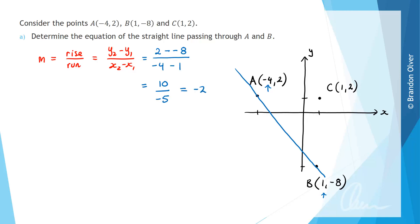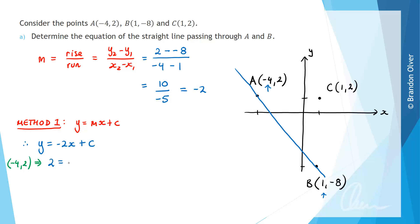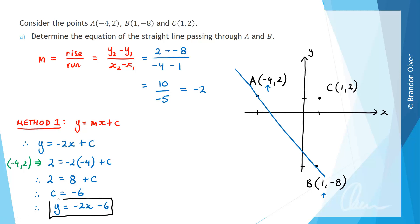Now that we know the gradient and a point the line passes through, we can find the equation of the straight line. Method 1 uses y equals mx plus c. We substitute the gradient to get y equals negative 2x plus c, then substitute point A (negative 4, 2): 2 equals negative 2 times negative 4 plus c, so 2 equals 8 plus c, therefore c equals negative 6. The equation of the straight line is y equals negative 2x minus 6.